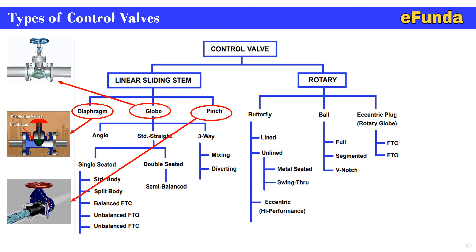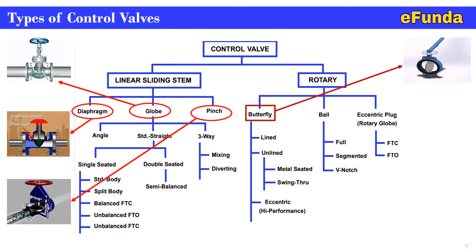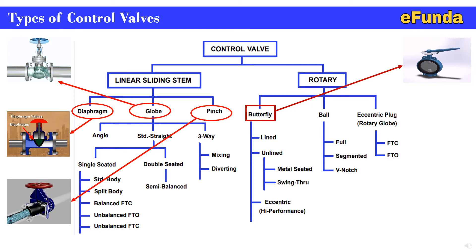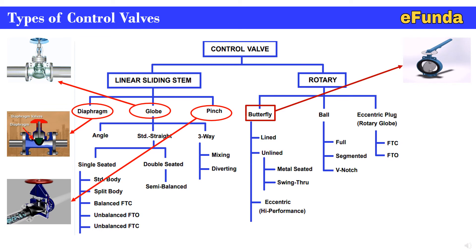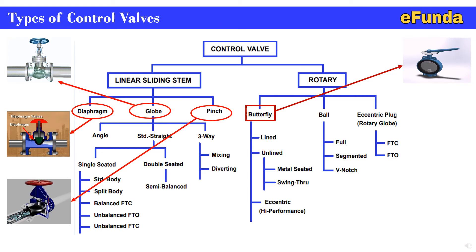For the rotary type, the first is the butterfly valve. One can refer to the animation showing the butterfly valve connected in-line. The butterfly valve consists of a rotating disc in trunnion bearings. Traditionally, butterfly valves were limited to low pressure and temperature due to the inherent limitations of the soft seating used in butterfly valve design.